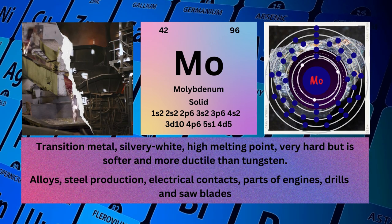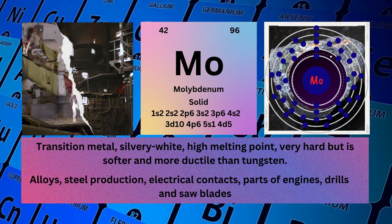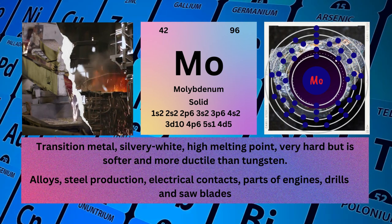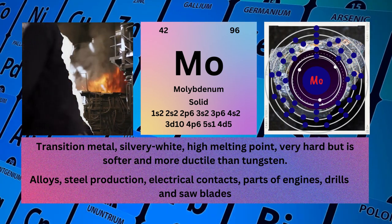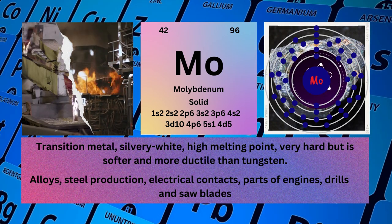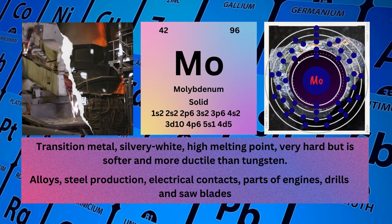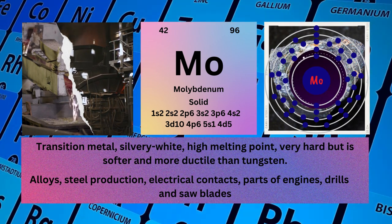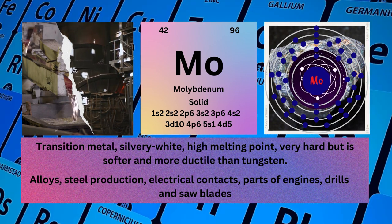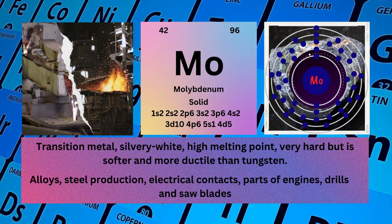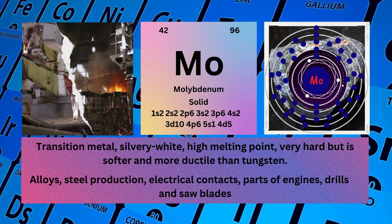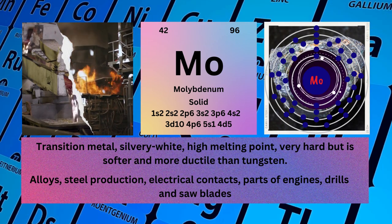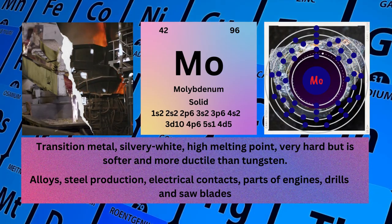Electronic configuration: 1s² 2s² 2p⁶ 3s² 3p⁶ 4s² 3d¹⁰ 4p⁶ 5s¹ 4d⁵. Physical properties: transition metal, silvery white, high melting point, very hard but softer and more ductile than tungsten. Molybdenum is used for alloys, steel production, electrical contacts, parts of engines, drills, and saw blades.